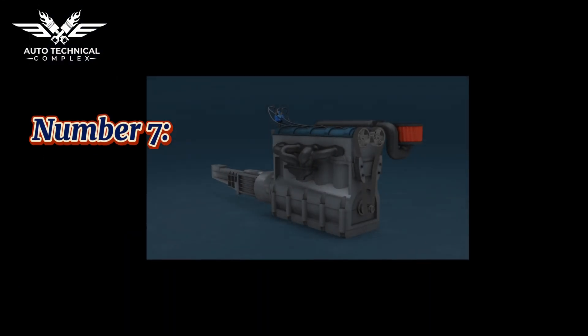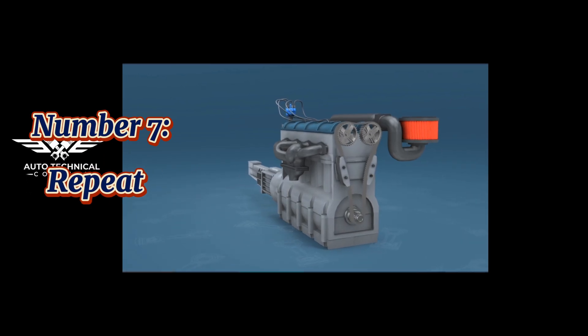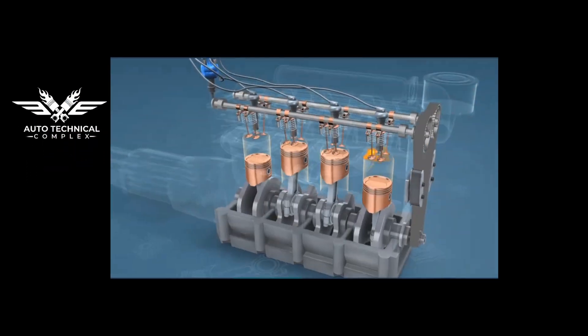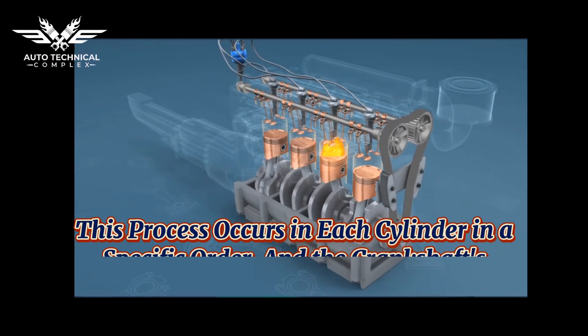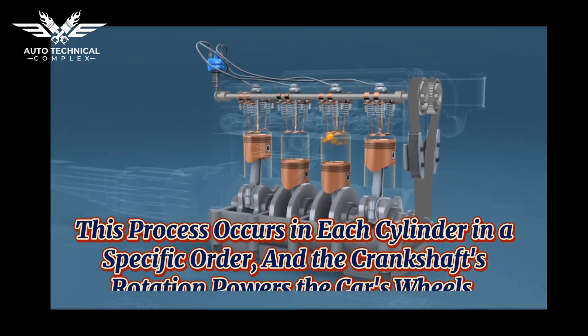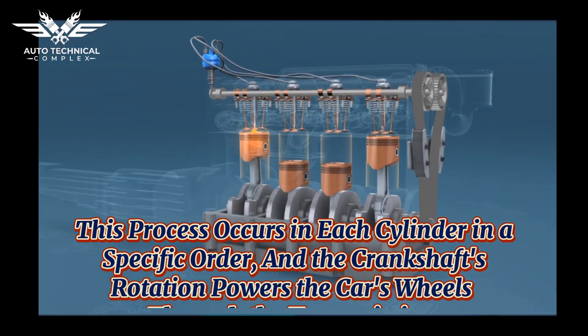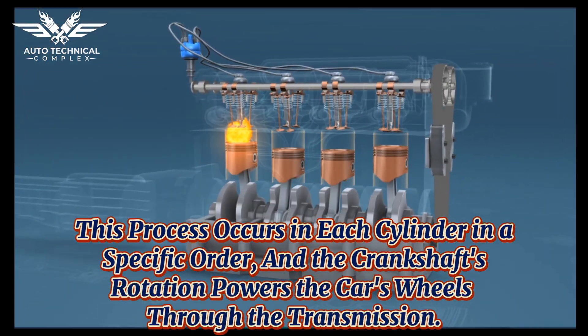Number seven: repeat. This process occurs in each cylinder in a specific order, and the crankshaft's rotation powers the car's wheels through the transmission.